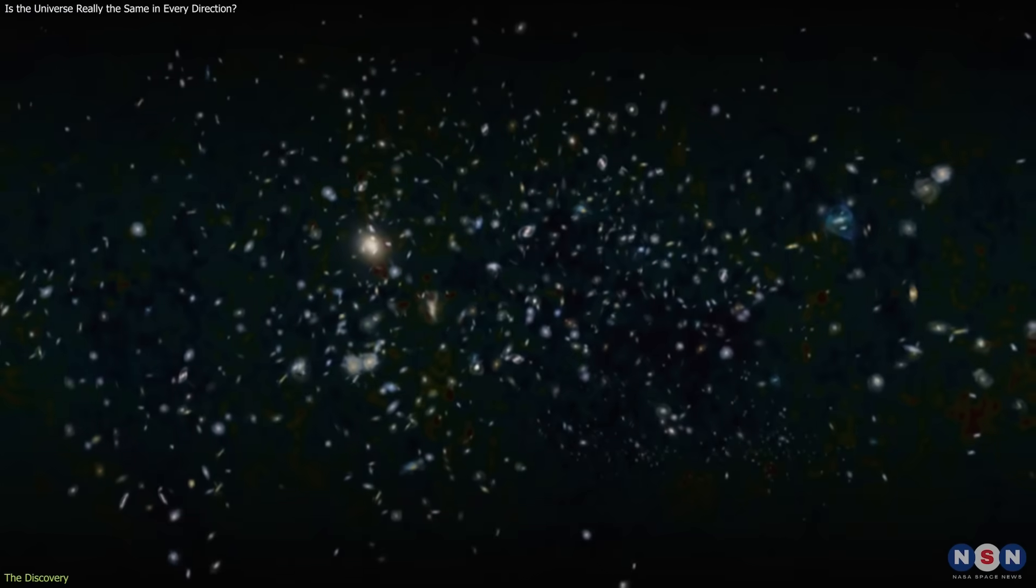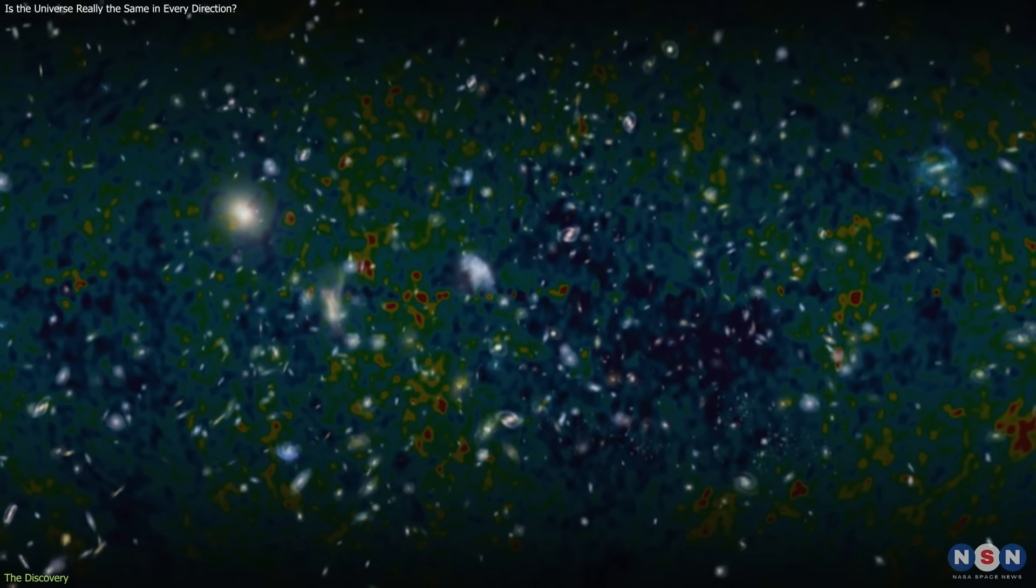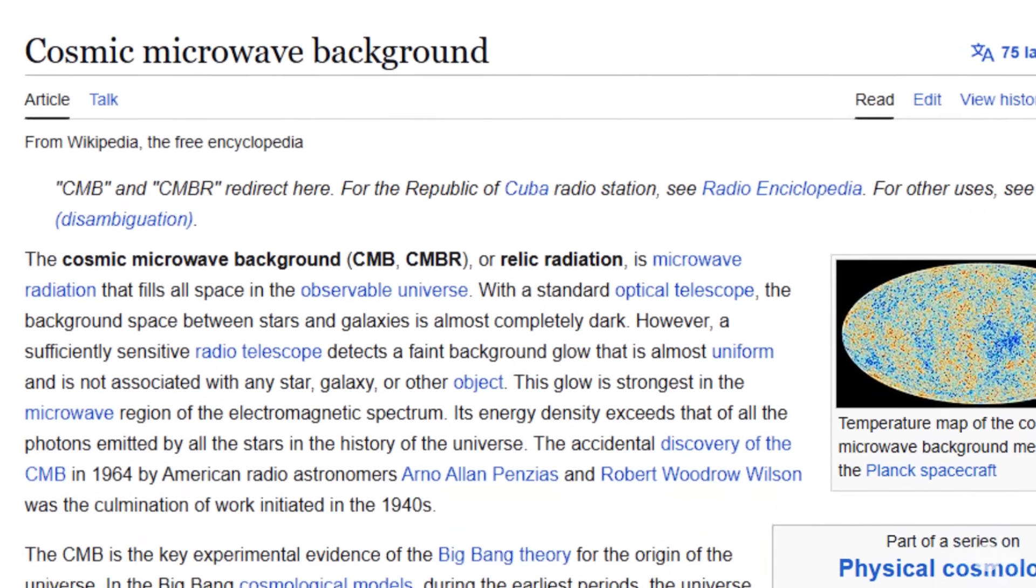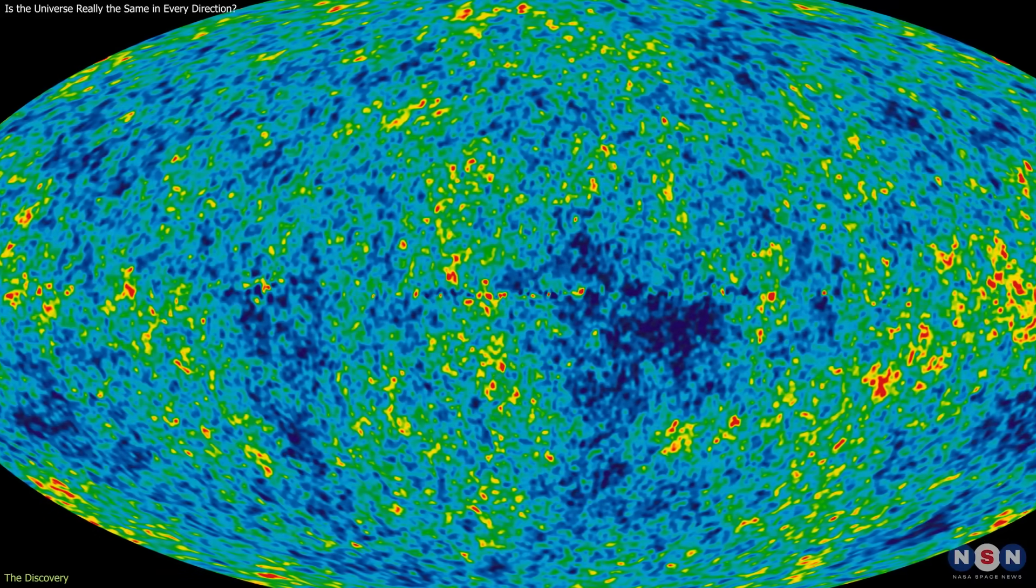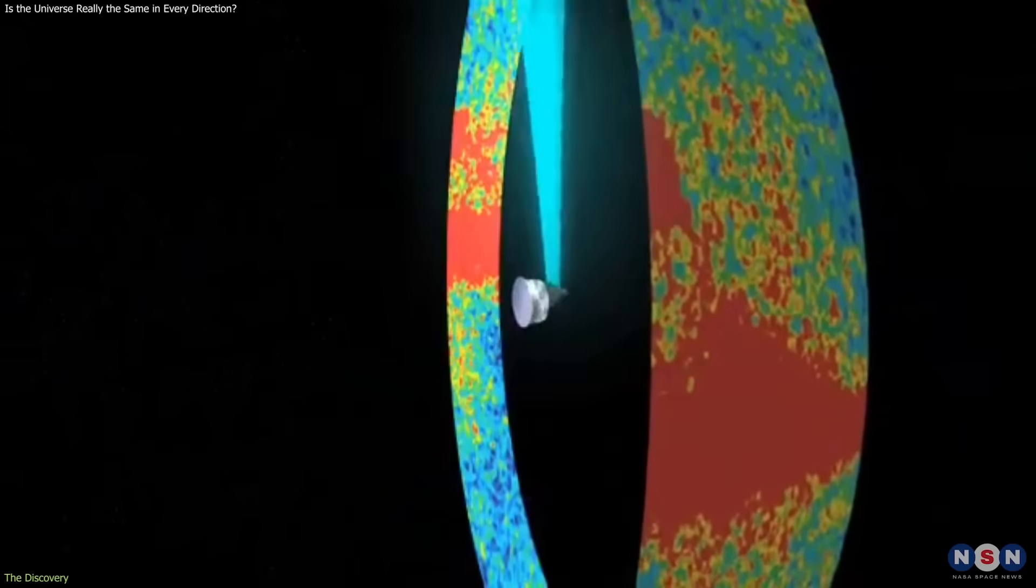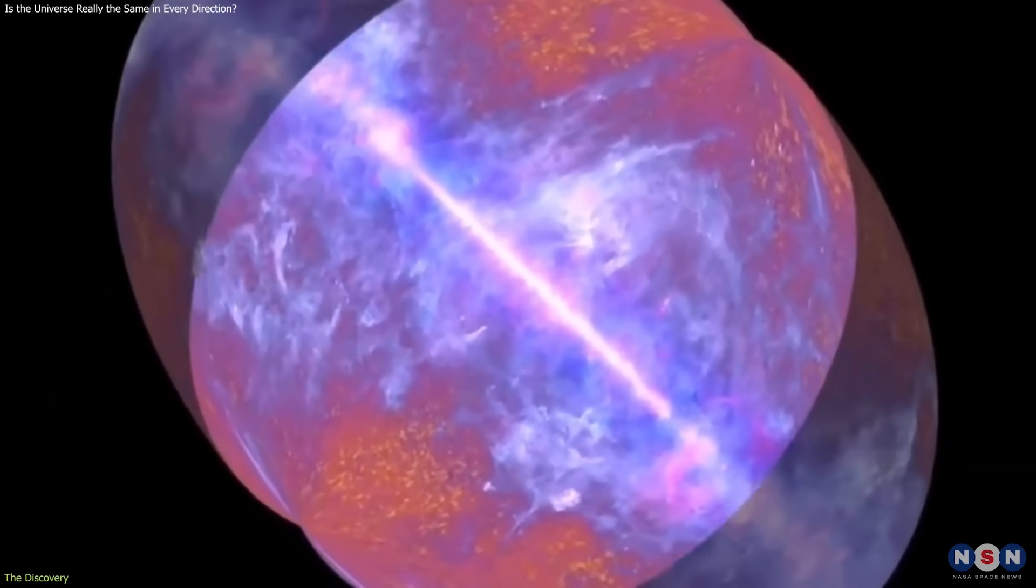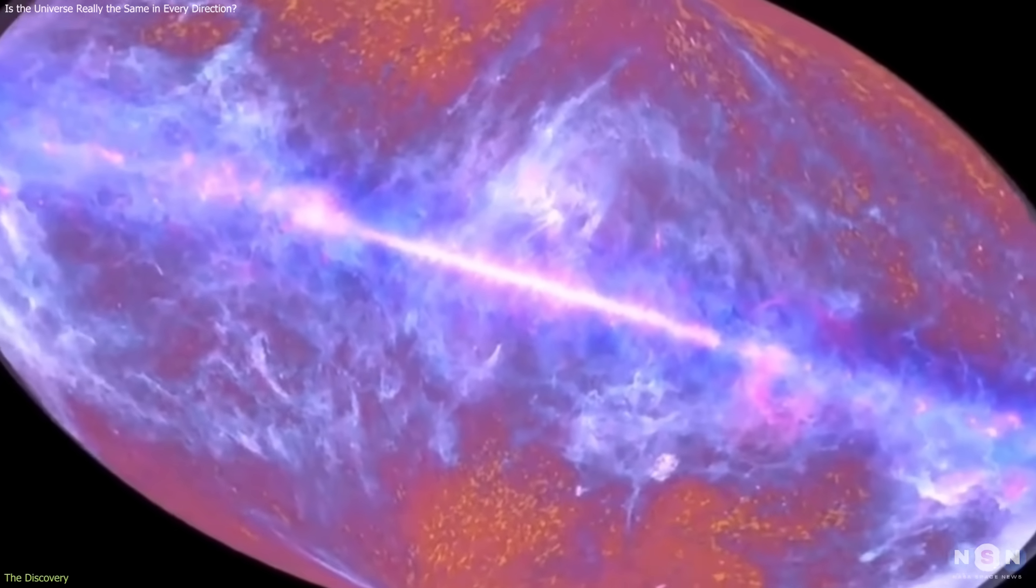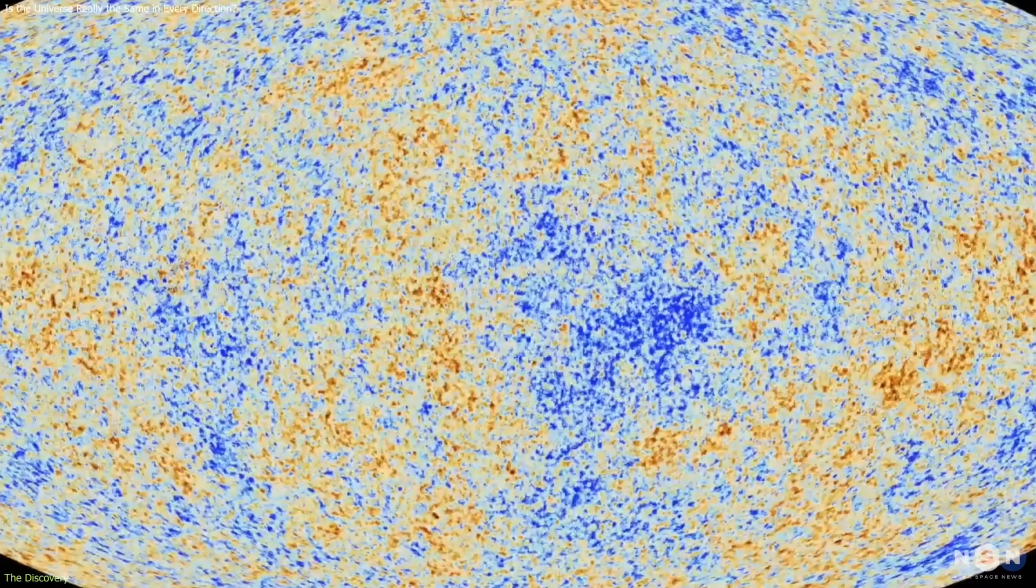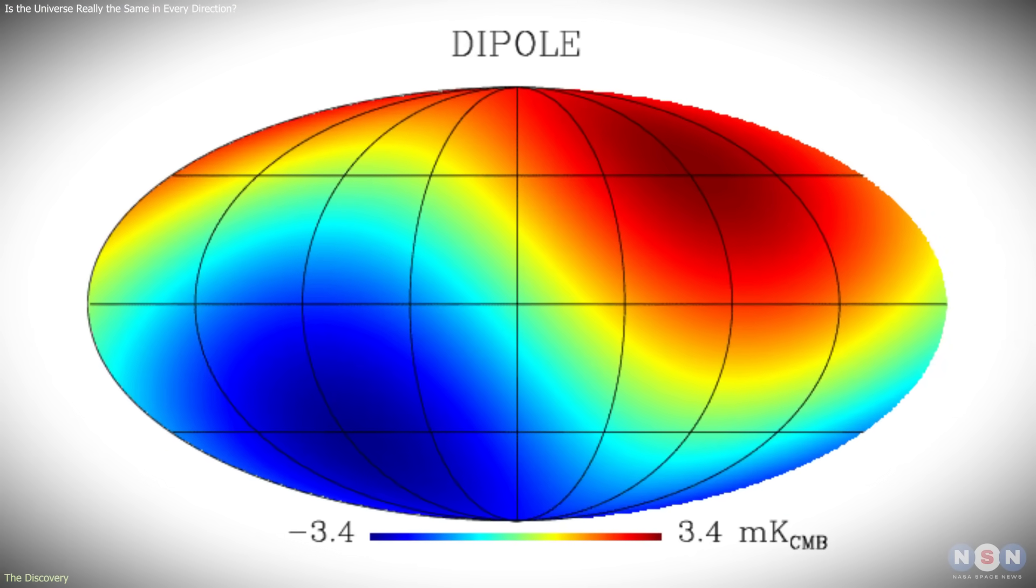The starting point of this discussion is one of the most precisely measured signals in cosmology, the Cosmic Microwave Background, or CMB. This radiation, left over from the early universe, has been mapped in extraordinary detail by multiple space missions. These observations show that the early cosmos was extremely uniform, with only tiny temperature variations across the sky. One feature of the CMB stands out clearly, a dipole pattern.